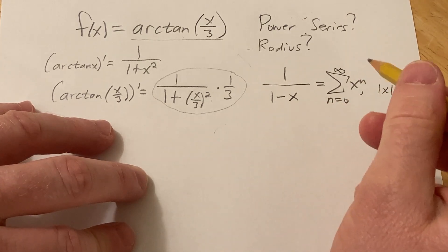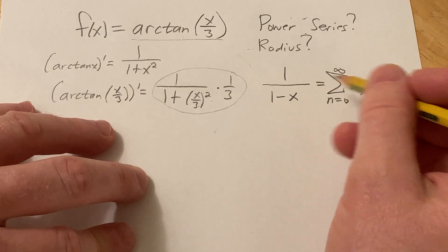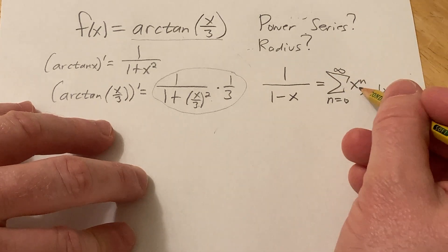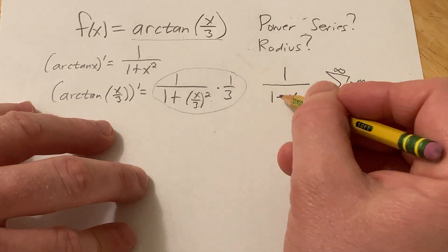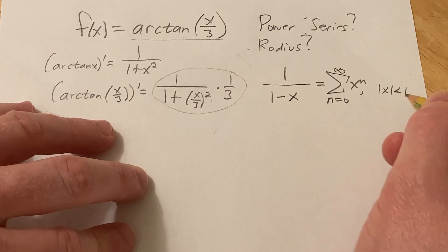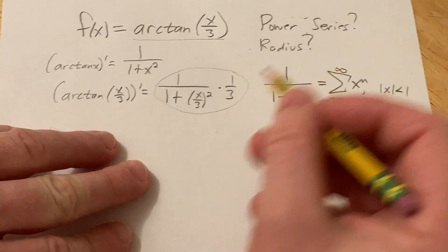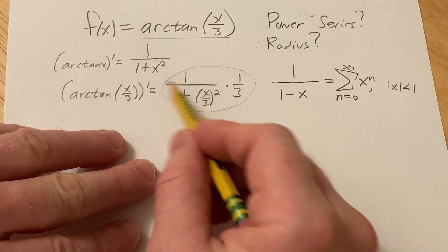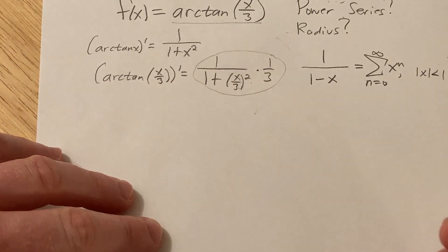And this is valid if the absolute value of x is less than 1. And if you know infinite geometric series, this is just an infinite geometric series here where r is equal to x and it converges to this if the absolute value of x is less than 1.